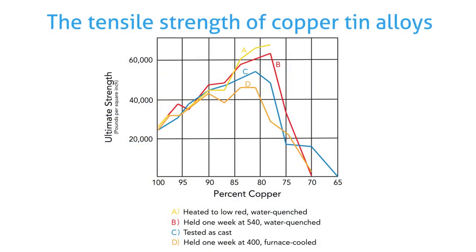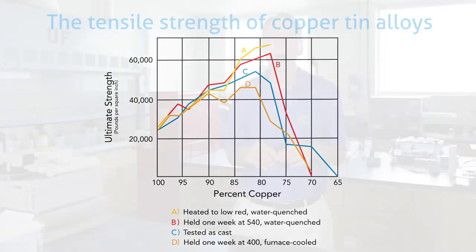When copper is alloyed with tin, its strength increases. A graph shows that tensile strength increases as more tin is added — up to a point. If too much tin is added, tensile strength drops precipitously because you've entered another phase of bronze that's not desirable. So understanding how much tin to add was critical for ancient metal workers.